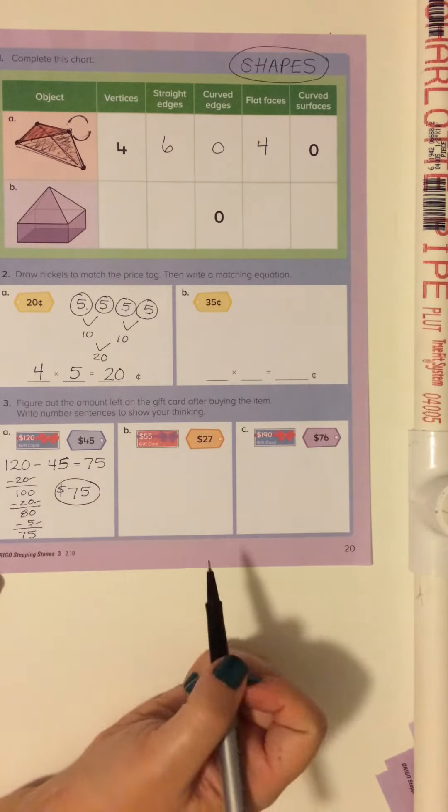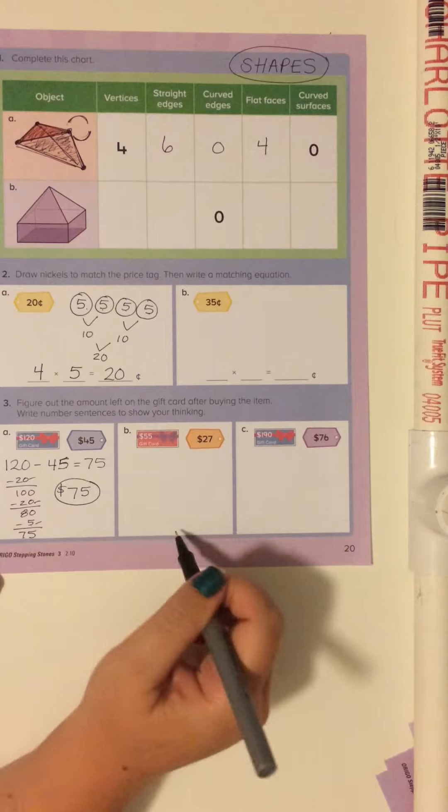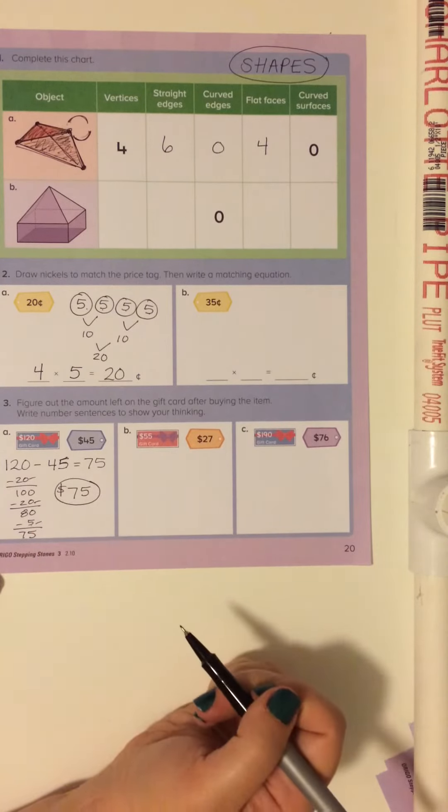So my answer is 120 minus 45 equals 75. So whatever your thinking is to solve this problem, just make sure to show it to me on the paper here.